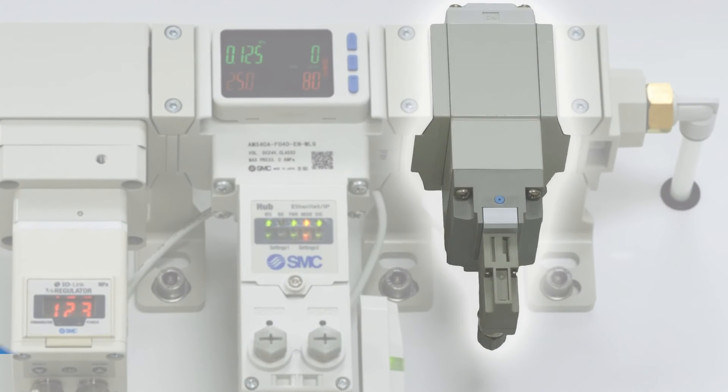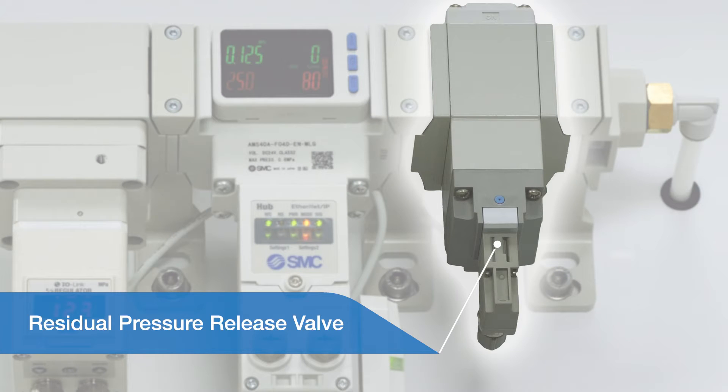The final component is the residual pressure release valve. This can be used to isolate and vent the air supply downstream of the air management system if required.